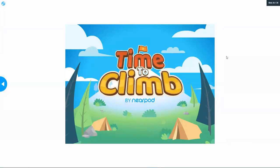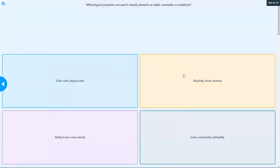There's going to be a Time to Climb at the end of this. You're just going to do the Time to Climb and then you'll be done with the Nearpod. You also need to go do the do-now activity and the exit ticket, and that is it for today.